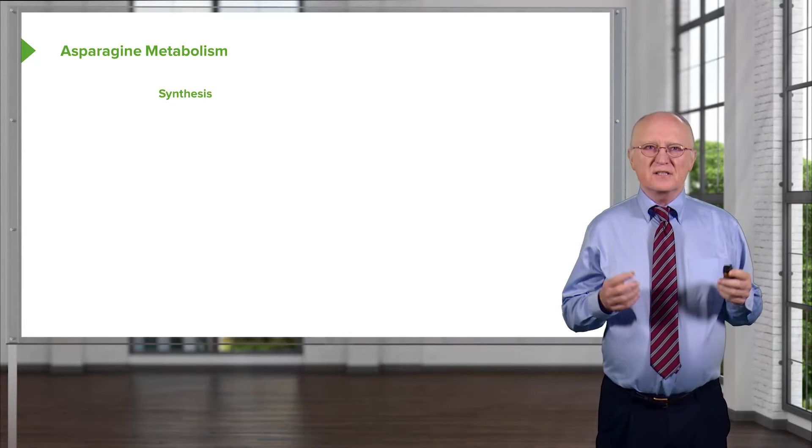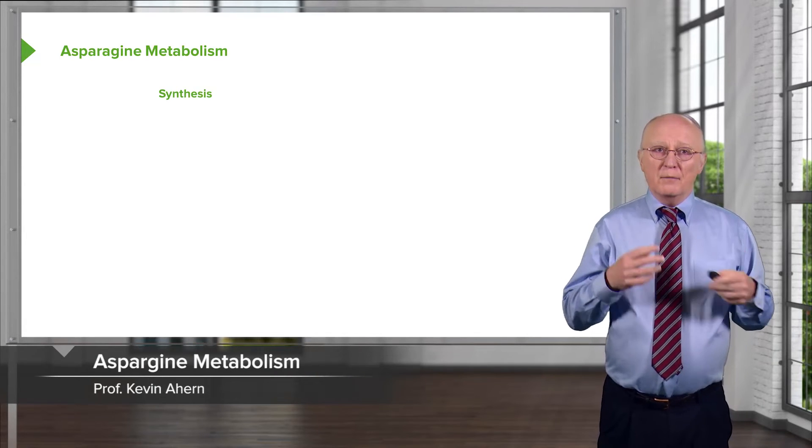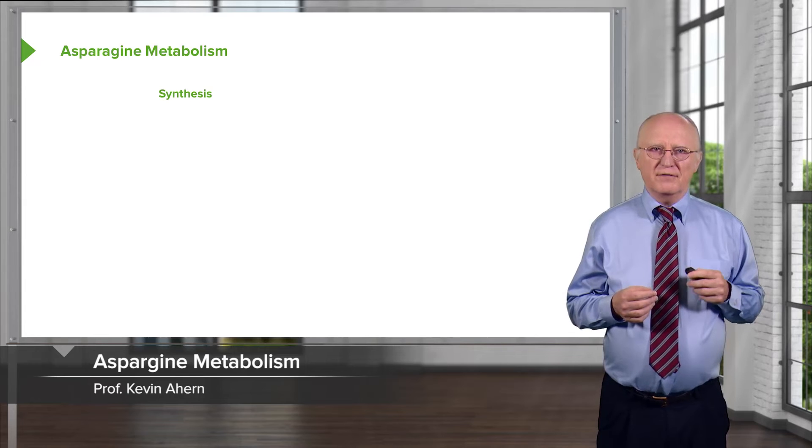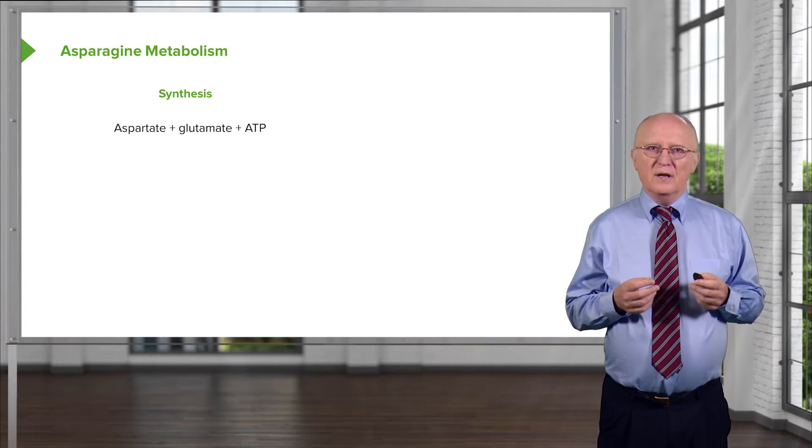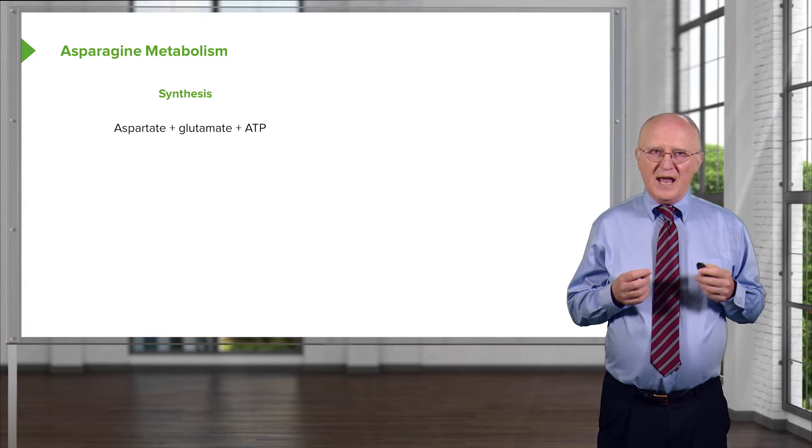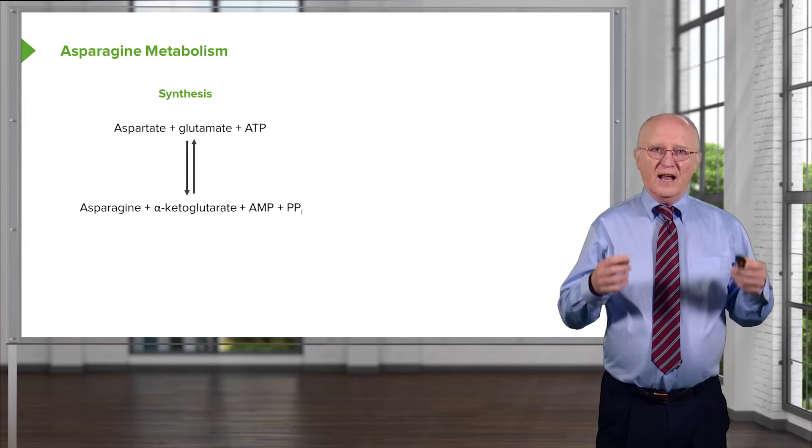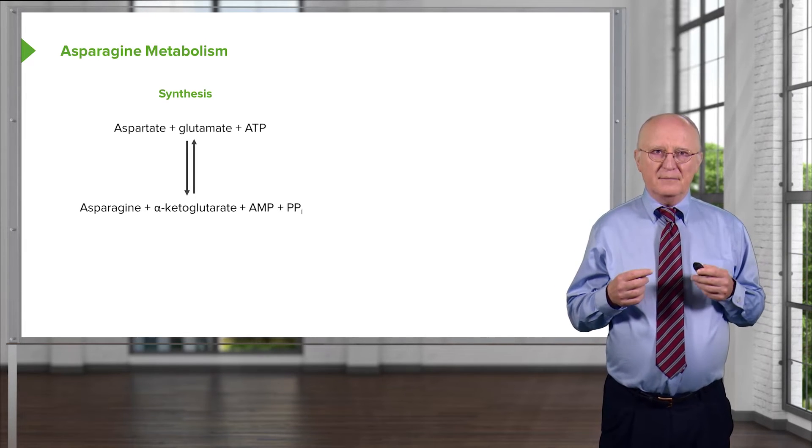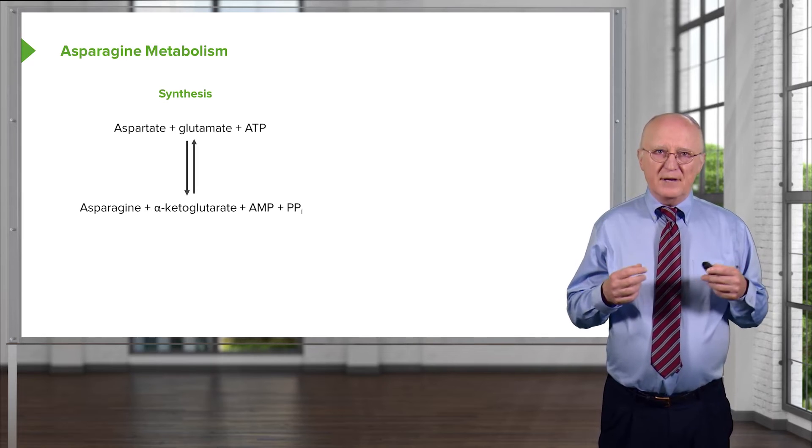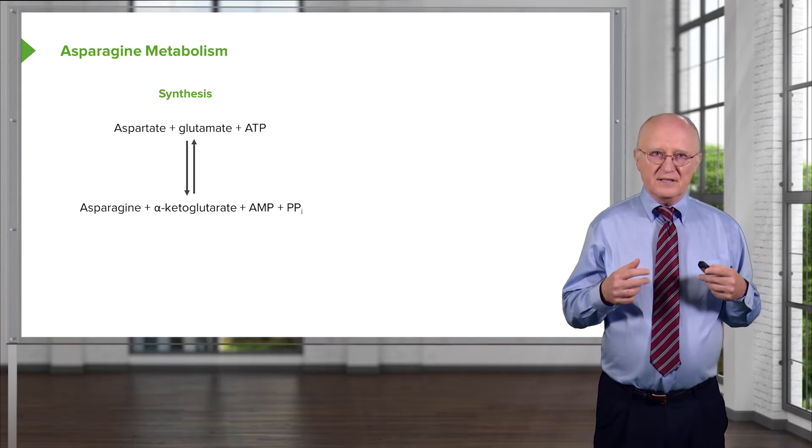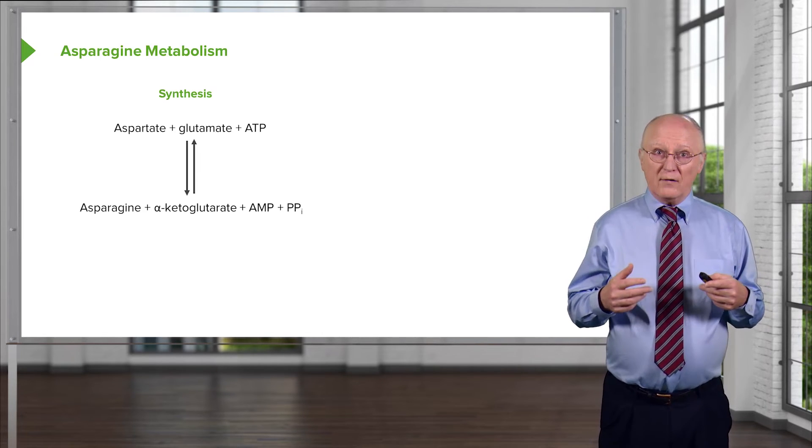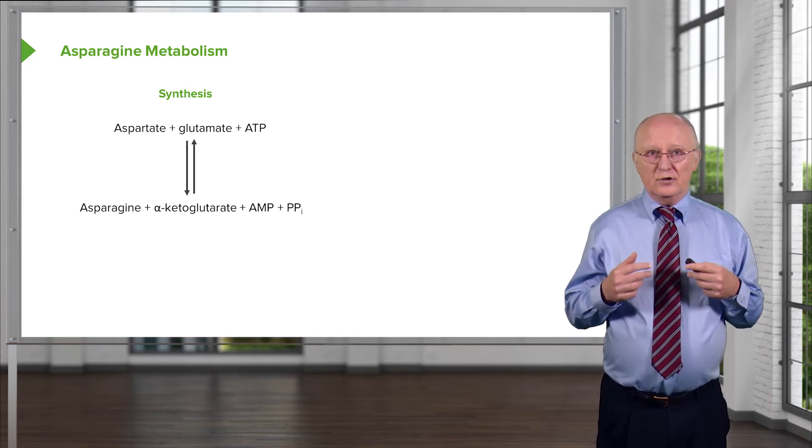The synthesis of asparagine occurs from aspartic acid in a fairly simple fashion. We can see here that if we start with aspartate and glutamate and we add ATP, we can create asparagine and alpha-ketoglutarate plus AMP. Now this is a transamination, but this is a transamination that's a little bit different in the sense that it's requiring additional energy to do that.